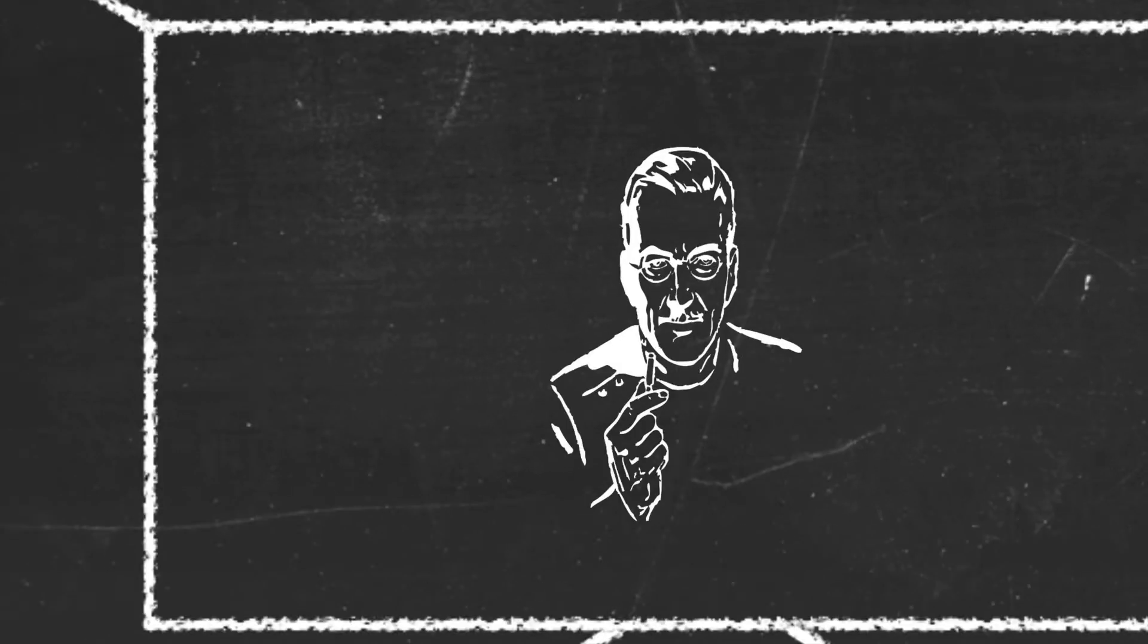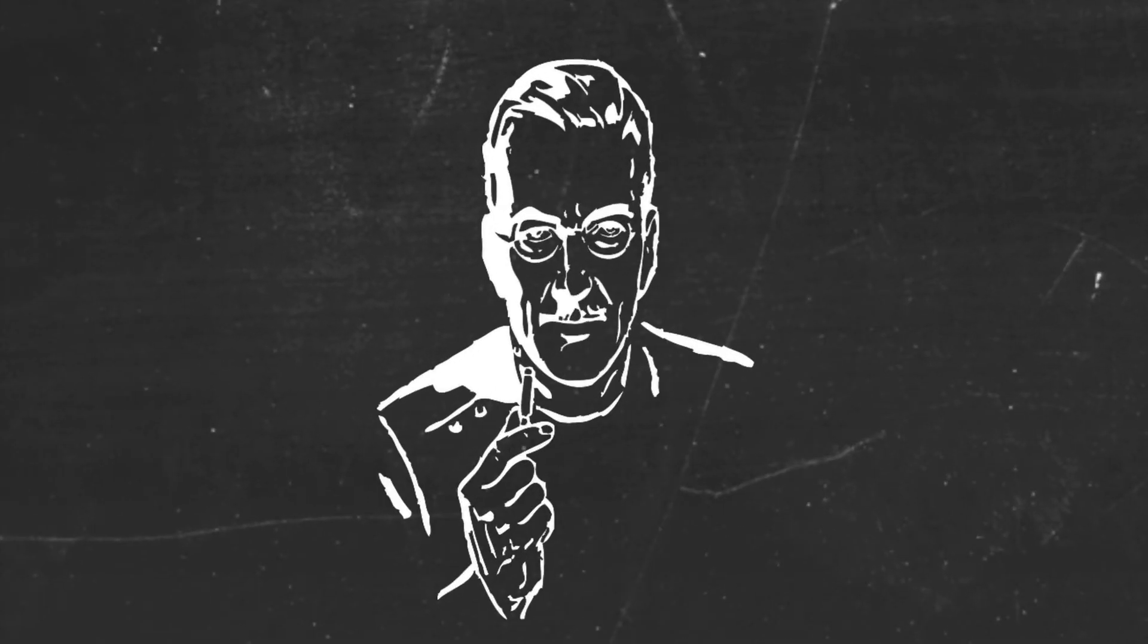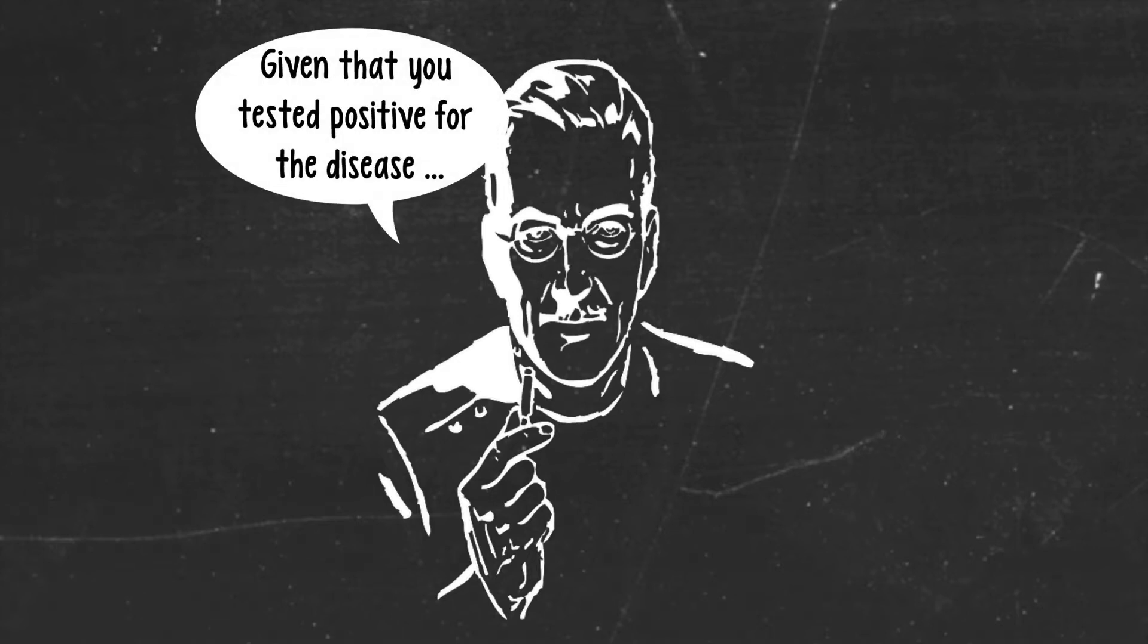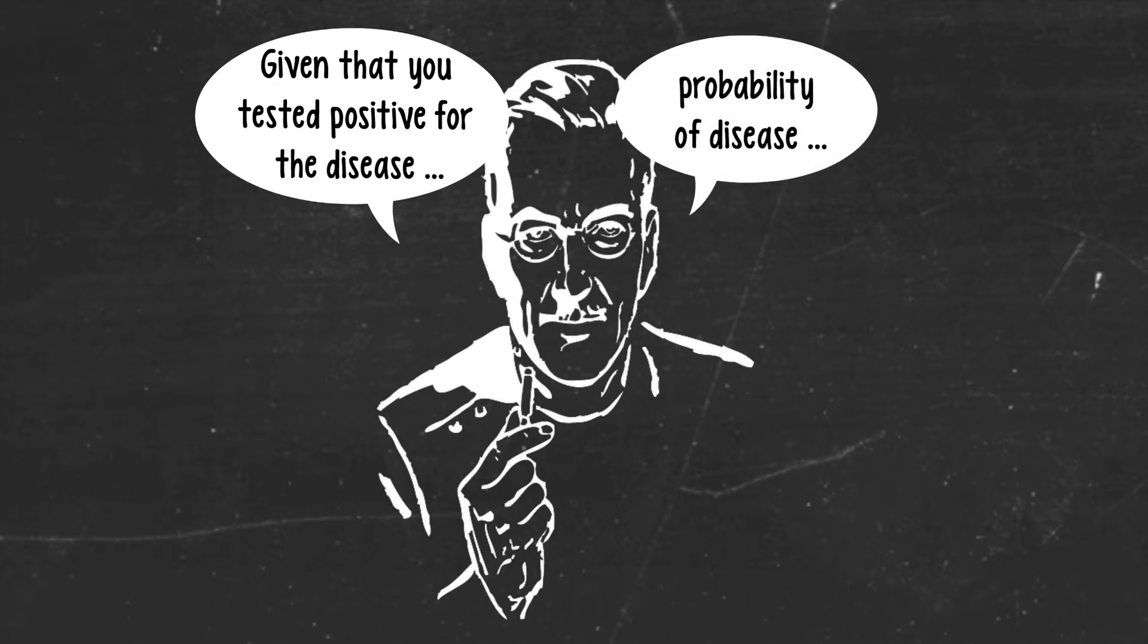So now that you've gotten the positive test result, the doctor probably wants you to come back to his office and discuss the test results and he might say something like, given that you tested positive, I would estimate the probability of disease to be around 80%. That sounds pretty grim, right? With a predicted likelihood of 80%, you might feel that the odds are pretty much stacked against you. But is the doctor correct?